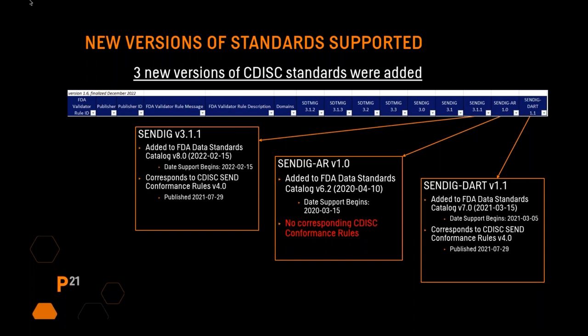These are the columns in the FDA validator spreadsheet shown at the top of my screen in blue. You can see the different column names. On the far right, they did add three new columns. This is one of the biggest changes to the validator rules — the addition of these three new standards.